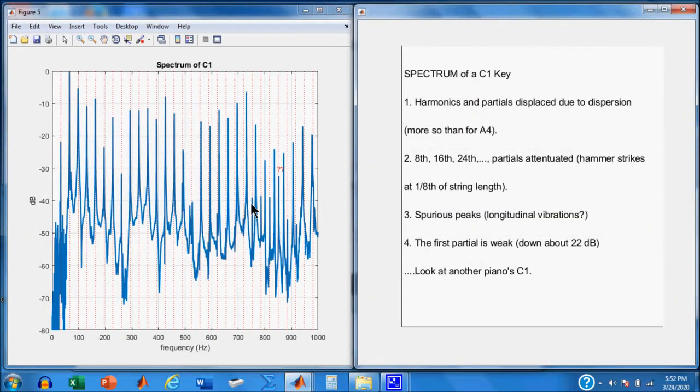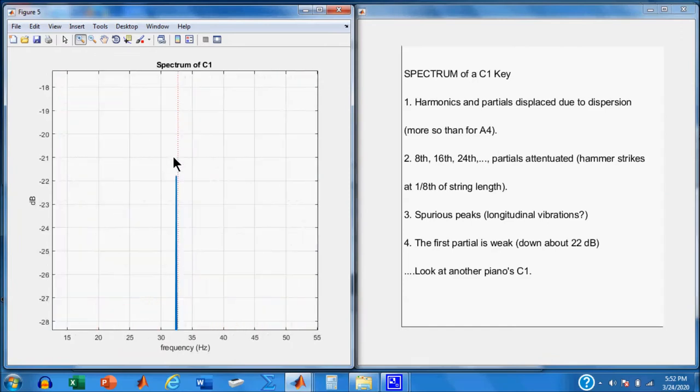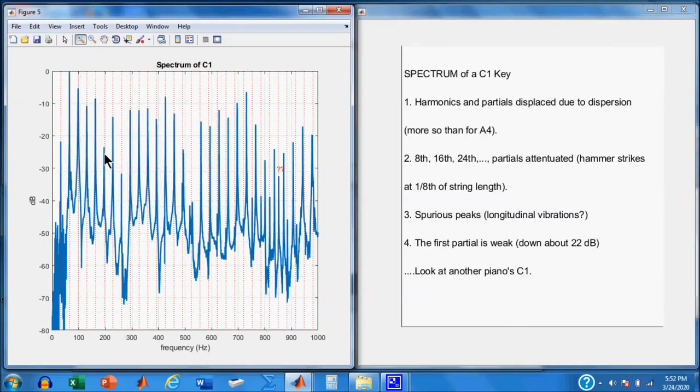Let's take a look at the spectrum. Now, the spectrum is quite interesting. Here is the first partial. You see the first partial is right on the harmonic of 32.7 hertz. But it is 22 dB down. So it's quite weak. You also see that we have a kind of a periodic nature to this spectrum. Here the eighth, the sixteenth, and the twenty-fourth are attenuated. And that's a consequence of the fact that this key is struck at one-eighth of its speaking length. And so that particular harmonic or partial is going to be attenuated, the eighth one. So this is one, two, three, four, five, six, seven, eight, right here.